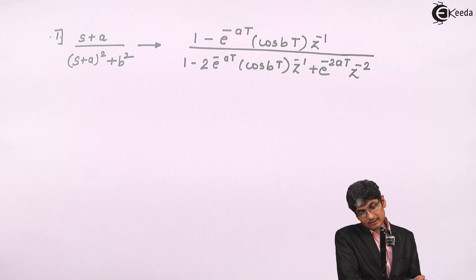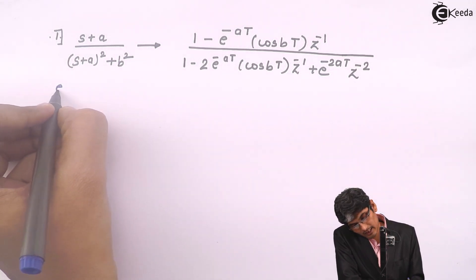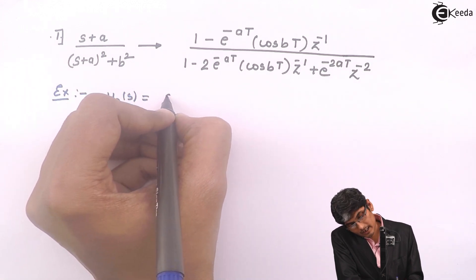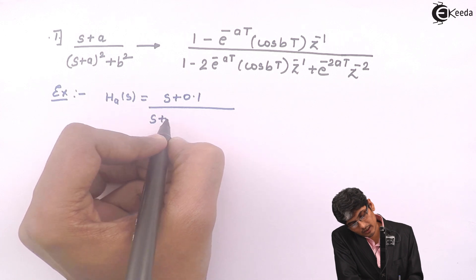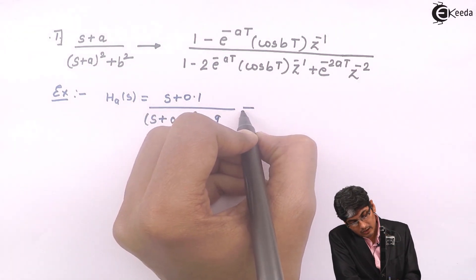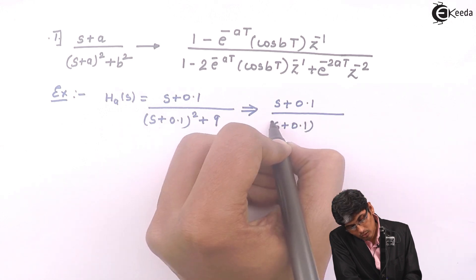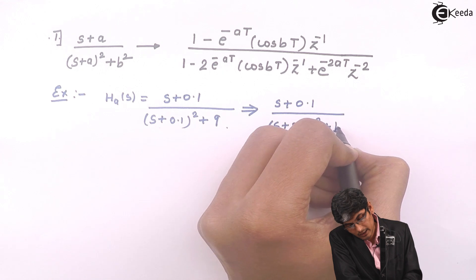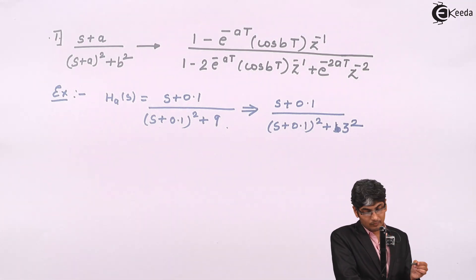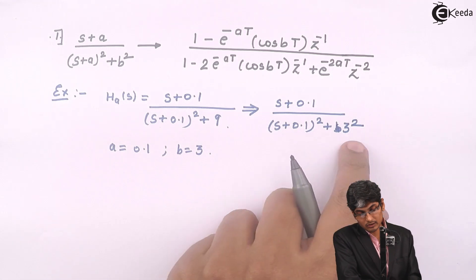Let us derive an example. Suppose I have H_a(s) = (s + 0.1) / [(s + 0.1)² + 9]. I can adjust this in terms of the formula as (s + 0.1) / [(s + 0.1)² + b²], where instead of 9 we write b² = 3². So here a = 0.1 and b = 3.